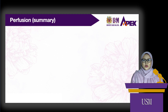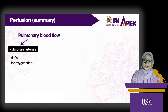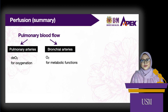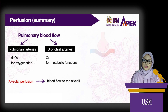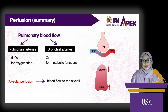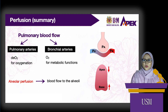Throughout this video, we have learned about pulmonary perfusion. The lungs receive two blood supplies. The major one is from the pulmonary arteries, which carries deoxygenated blood that will be oxygenated at the alveoli. The minor blood supply is from the bronchial arteries, which carries oxygenated blood for the metabolic function of the bronchi and lung tissues. This minor blood supply is called physiologic shunt. We also looked at alveolar perfusion, which is the blood flow to the alveoli. It is dependent on arterial pressure, venous pressure, and alveolar pressure. Pulmonary blood flow throughout the lungs is uneven, dependent on the gravitational effects on hydrostatic pressure. Pulmonary perfusion is highest at the base and lowest at the apex of the lungs.